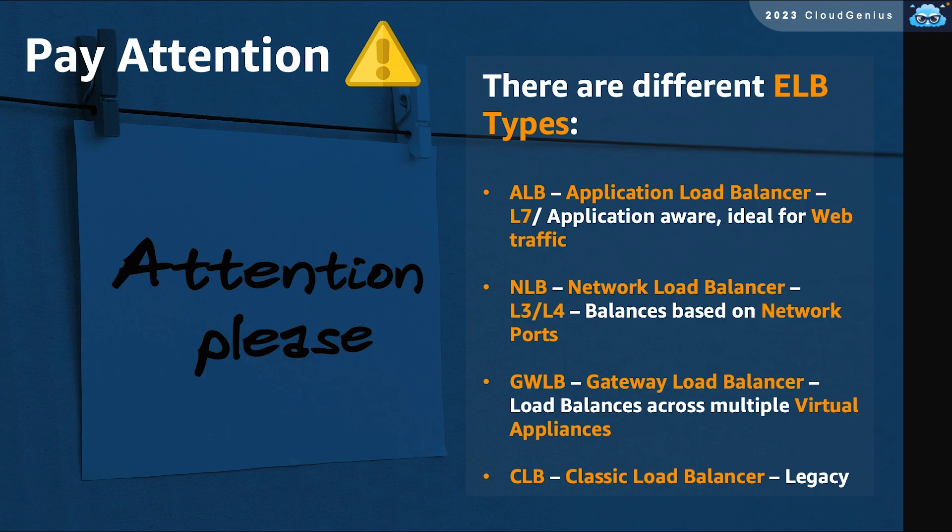GWLB, or Gateway Load Balancer, is the newest member of the family, used to load balance across multiple virtual appliances. The CLB, or Classic Load Balancer, is a legacy load balancer that has been replaced with the ALB.